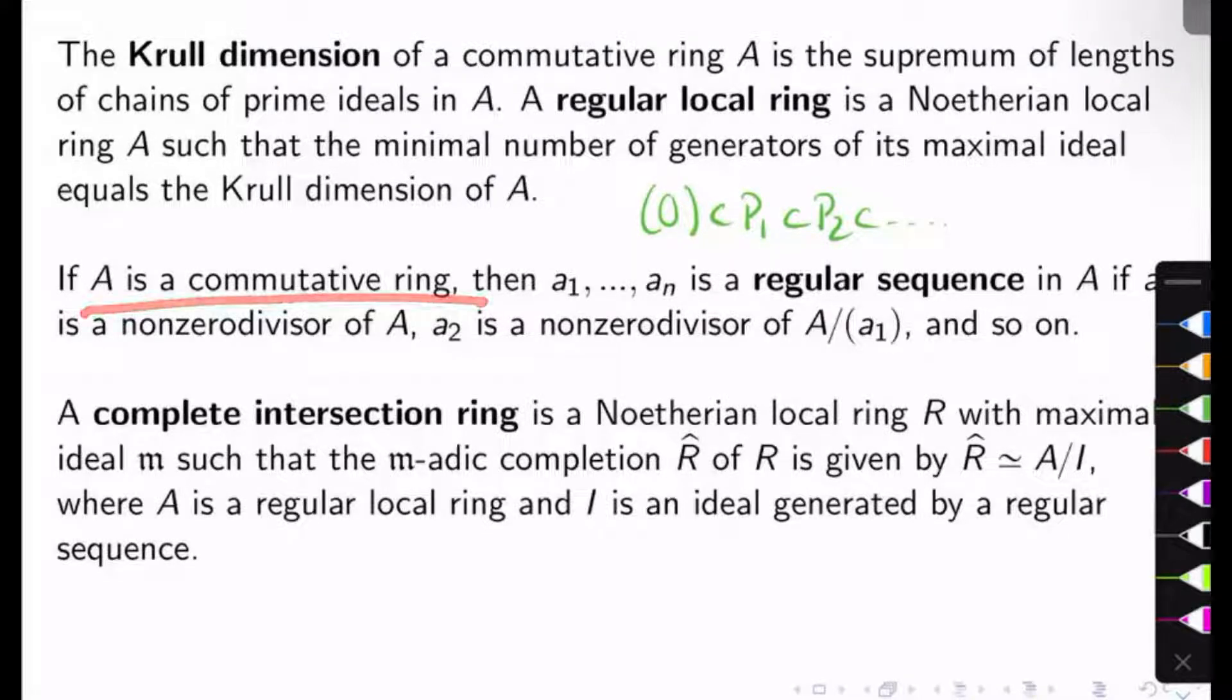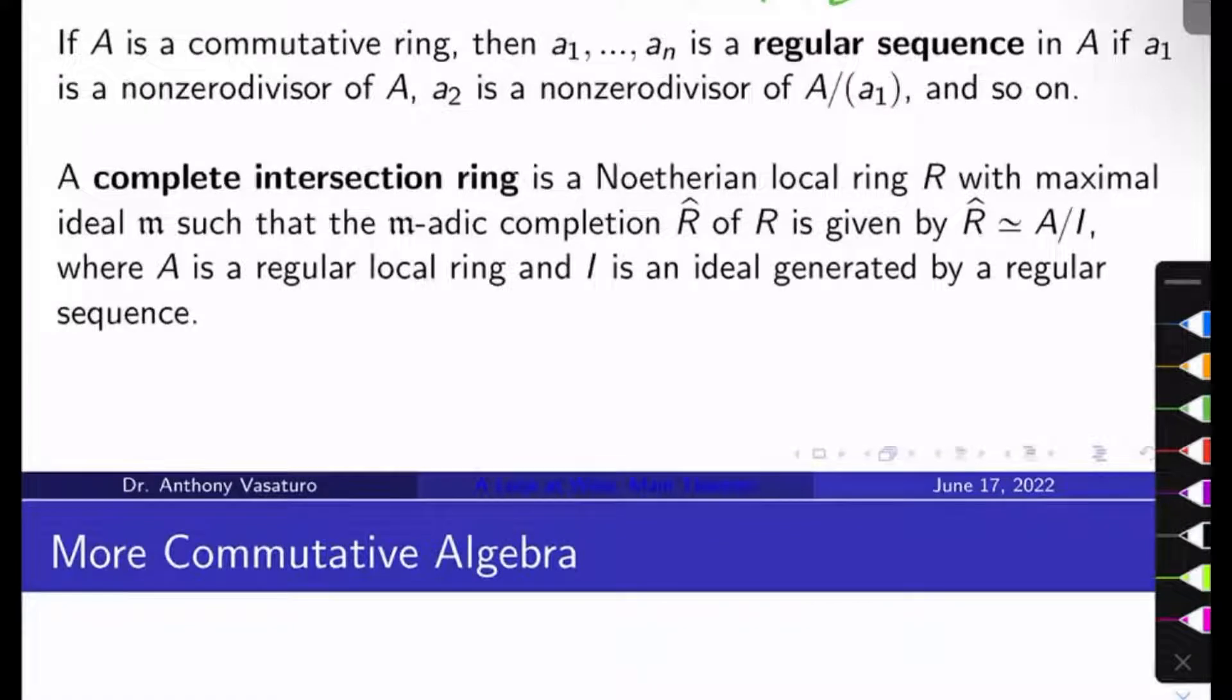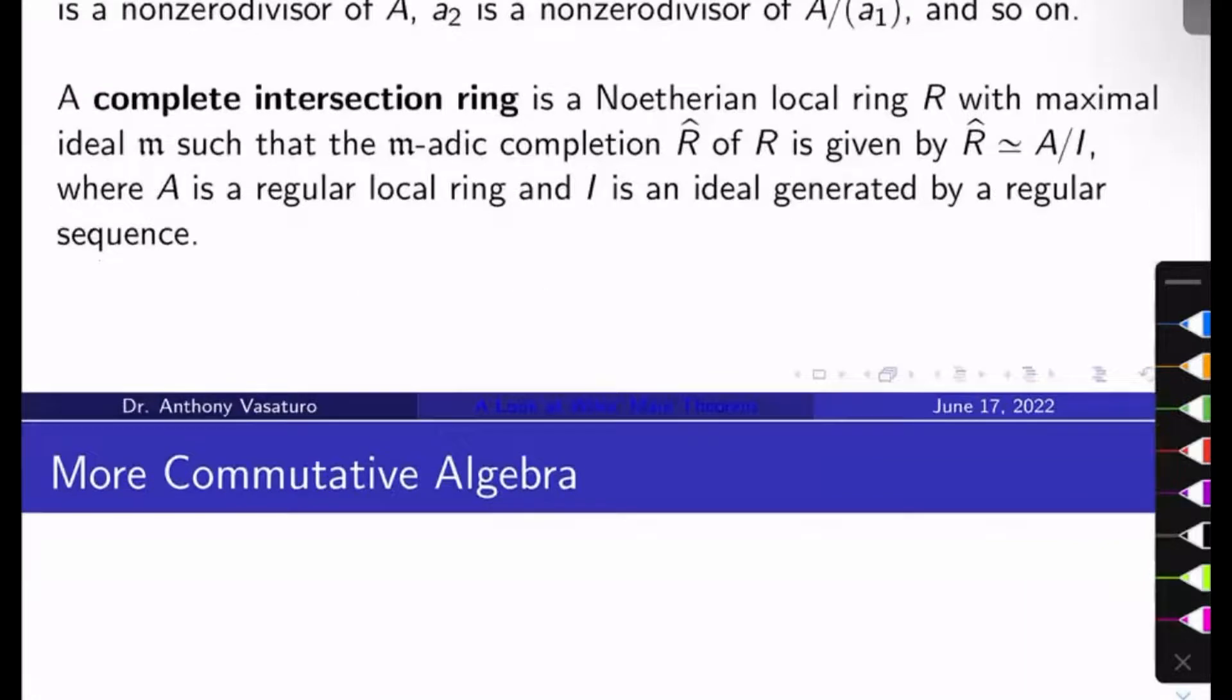If A is a commutative ring, a list of elements a1 through an is called a regular sequence in A if a1 is a non-zero divisor of A, a2 is a non-zero divisor of A mod the ideal generated by a1, a3 is a non-zero divisor of A mod the ideal generated by a1 and a2, and so on. There's some geometry going on here. We like when we cut varieties with hypersurfaces and the dimension of each component shrinks. That's what's going on with regular sequences.